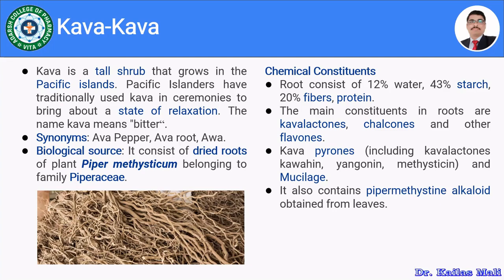Furthermore, kawakawa contains the Piper methysticum alkaloid, which might be present in the leaf. In summary, kawakawa comprises starch, fibers, and protein along with kawakawa lactones, chalcone, flavones, pyrones like kawakawa lactones, kawahine, yangonine, and methysticin along with mucilates. This covers the chemical constituents of kawakawa.